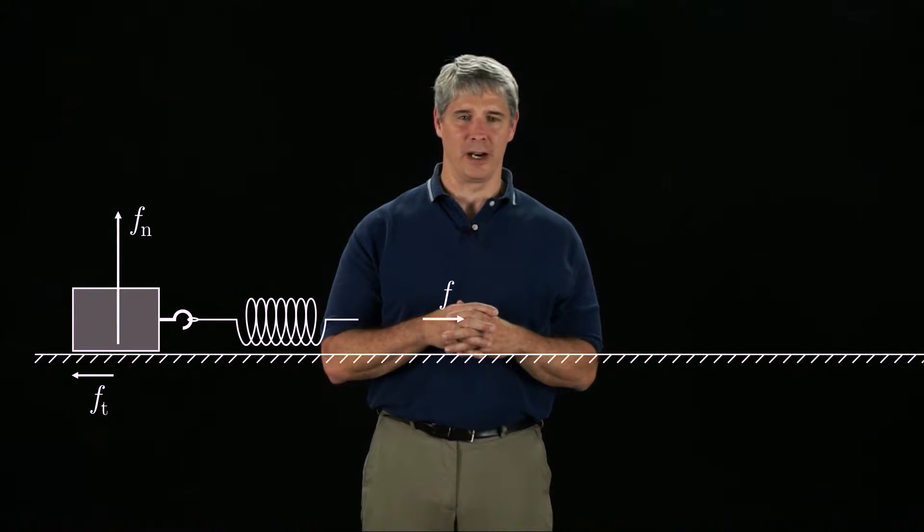To cancel the downward gravitational force on the block, the floor pushes upward with a normal force Fn. The force applied by the spring is F, which is opposed by the friction force Ft applied by the floor.